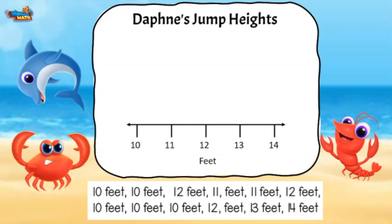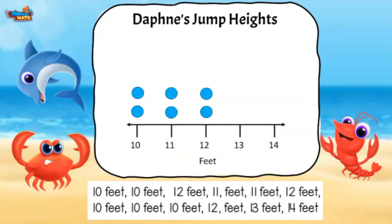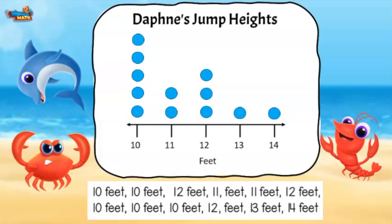There are two measurements of 10 feet, so I will put two dots above the 10. One dot above the 12, two more dots above the 11, and finally another dot above the 12. The second row is mine to plot. I need to put three more dots above the 10, one more dot above the 12, and one dot above the 13 and the 14. This completes our graph.